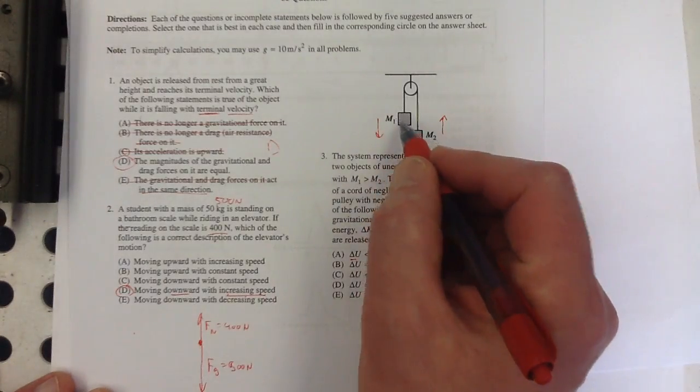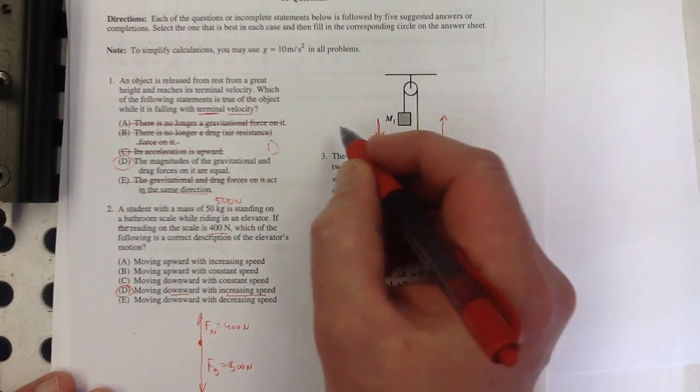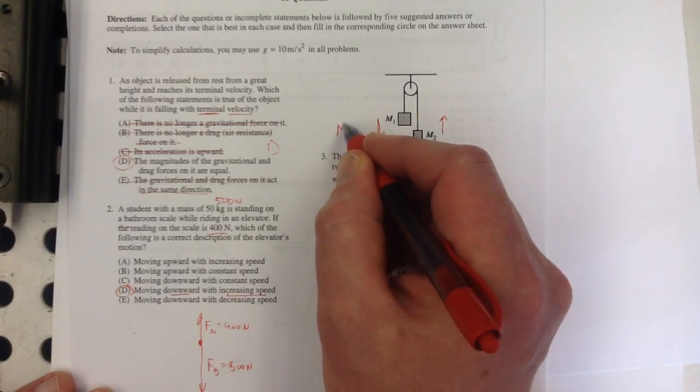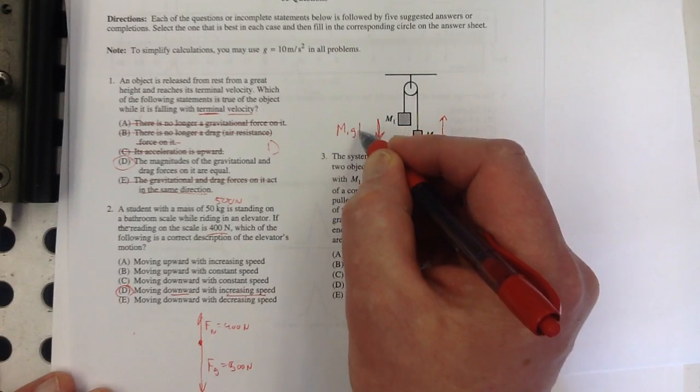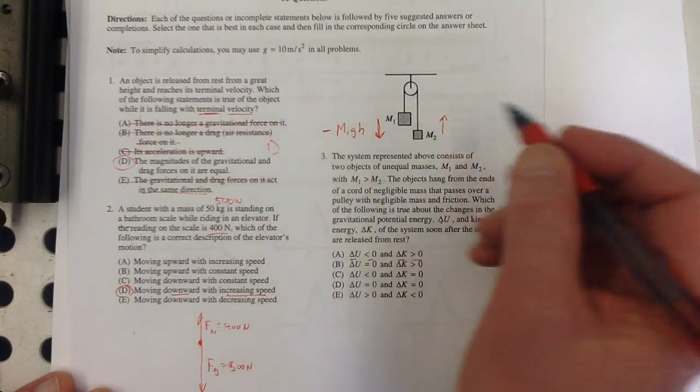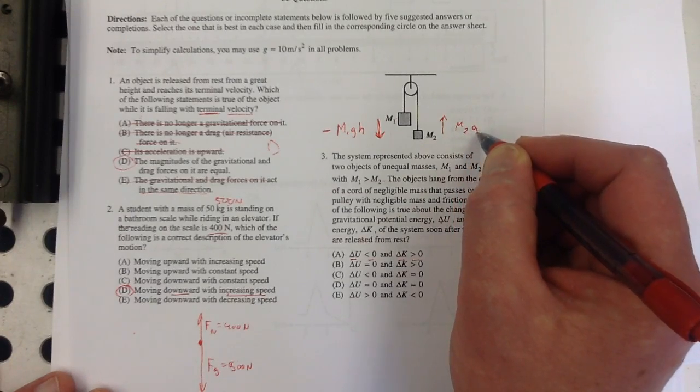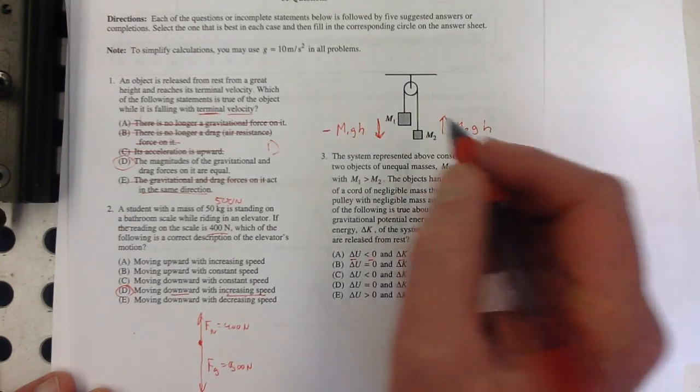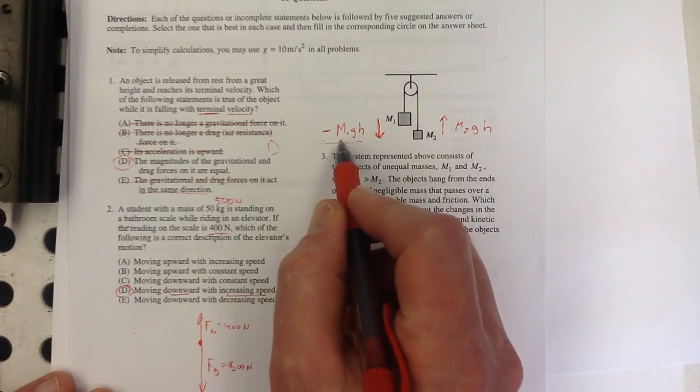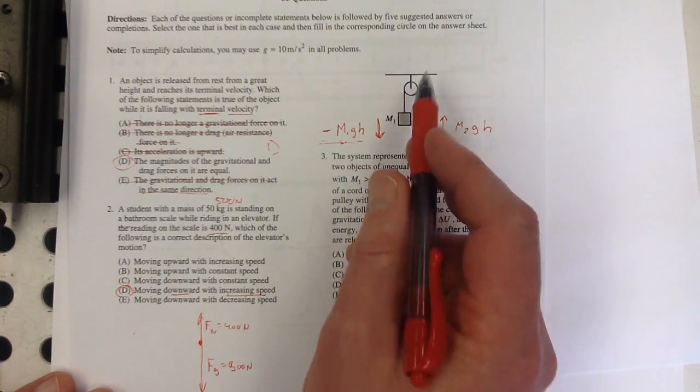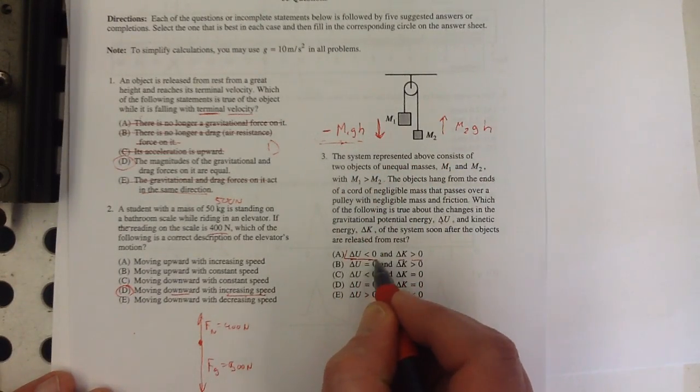So the change in gravitational potential energy here—it's going to lose some. It will be M1 G times however far they go, and it's gonna lose that much. And then here we have M2 G H and it's gonna gain that much. So it's gonna lose this and gain this, but this is more because the M1 is bigger. The H's of course are the same because they're attached by that string. So it looks like this is true.